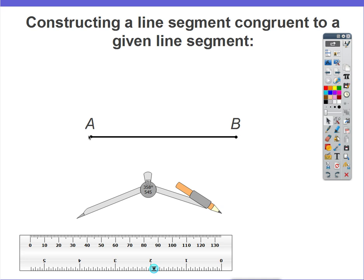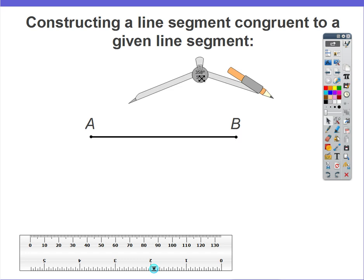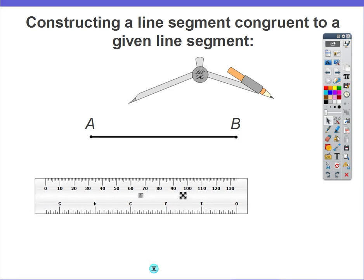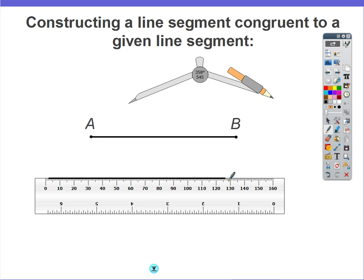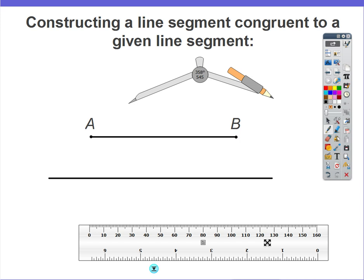Step number one: use a straight edge to draw another segment that is longer than segment AB. So let's go ahead and take my straight edge here, my ruler, and draw a line segment that is longer than segment AB. Once I draw that, I'm going to label a point C on that new segment.